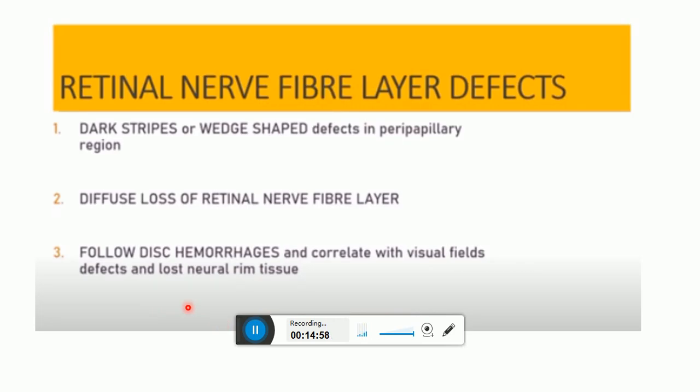The retinal nerve fiber layer defects. In glaucoma, the subtle RNFL defects precede the development of detectable optic disc and visual field changes. Their onset often follows disc hemorrhages. Two patterns occur: localized wedge-shaped defects, and diffuse defects that are larger and have indistinct borders.